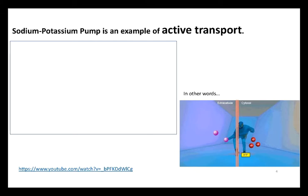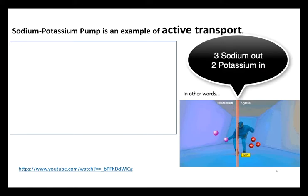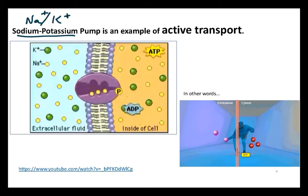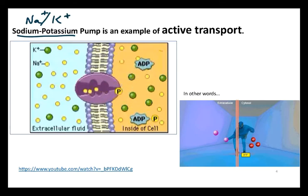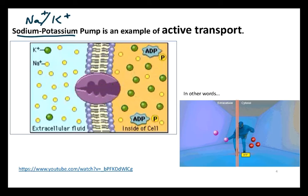The pump we always talk about, because it's so important in animal biology and particularly in terms of the functioning of the nervous and muscular system, is referred to as the sodium-potassium pump. Sodium and potassium are both positively charged ions, but when this pump is running over time, you end up with the cytoplasm of the cell having a slight negative charge compared to the fluid outside of the cell, setting up an ionic concentration gradient.